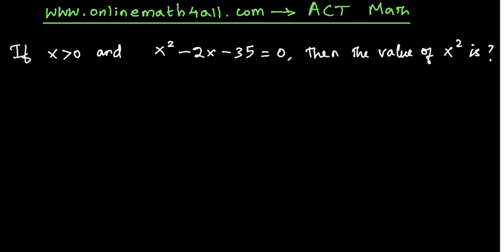We will be able to get the value of x from the given quadratic equation, that is x² - 2x - 35 = 0. If I solve this quadratic equation, I will be able to get two values for x.